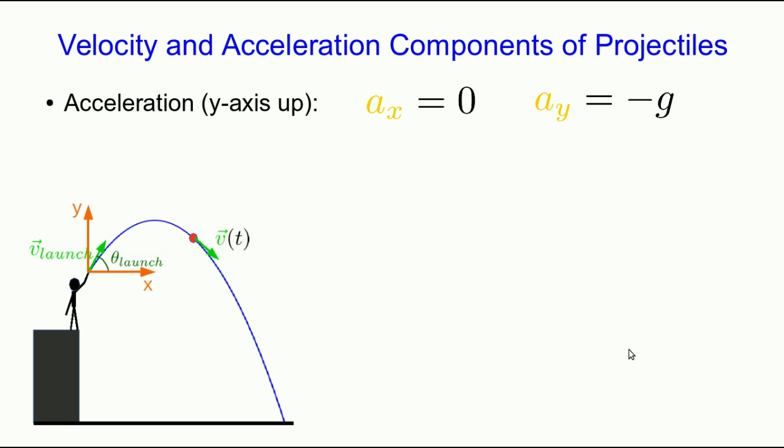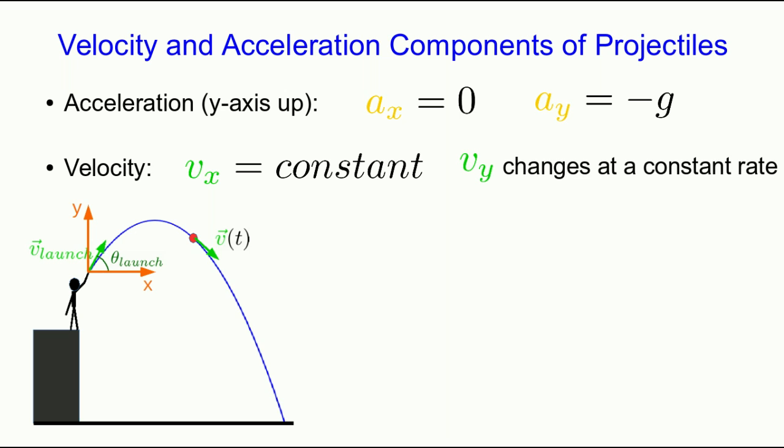So now we know our acceleration components, and they tell us that the x component of the velocity must be constant, right, because the x component of the acceleration is zero and the y component of acceleration will have no effect on the x component of velocity. Similarly, it tells us that our y component of velocity changes at a constant rate because ay is a constant.